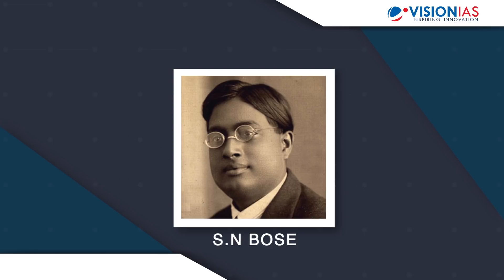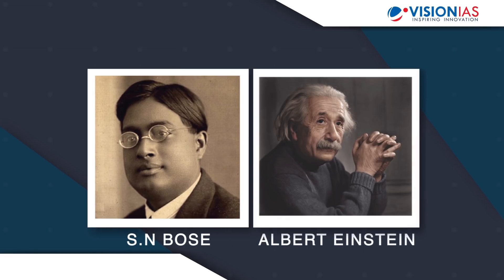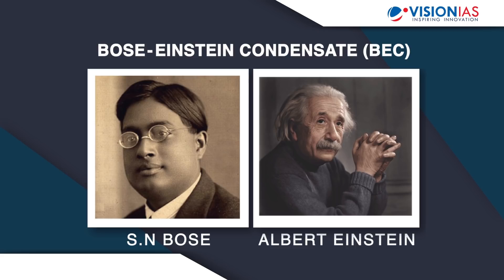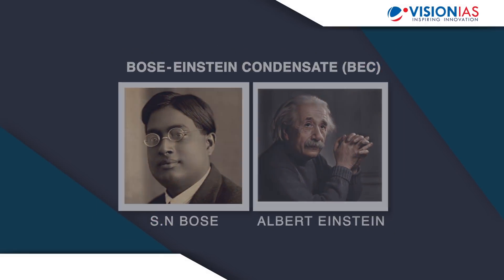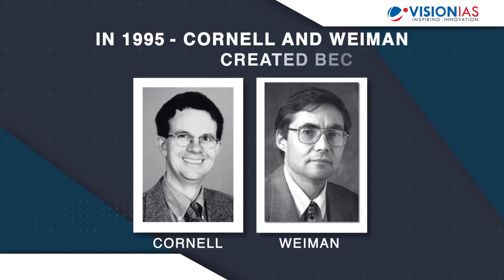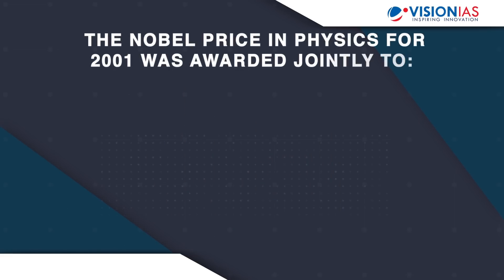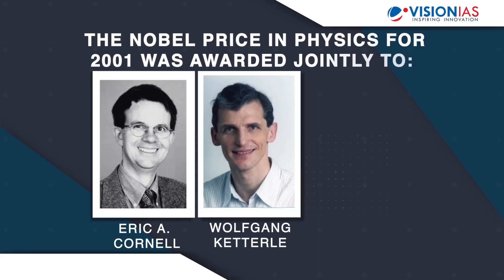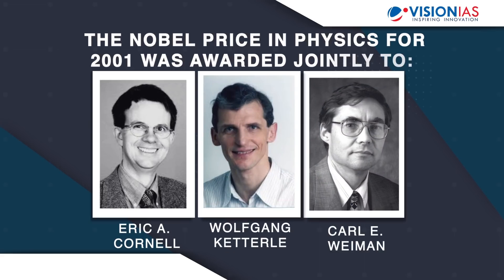In 1920, Indian physicist Satyendra Nath Bose did some calculations for the existence of a fifth state of matter. Building on his calculations, Albert Einstein predicted a new state of matter which eventually came to be known as the Bose-Einstein condensate. However, till that point it was only at a theoretical stage. It was only in 1995 that two scientists, Cornell and Wiemann, finally created this condensate, and in 2001, scientists Eric A. Cornell, Wolfgang Ketterle, and Carl E. Wiemann received the Nobel Prize in Physics for achieving Bose-Einstein condensation.